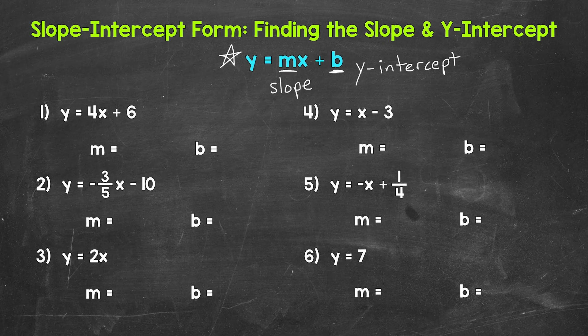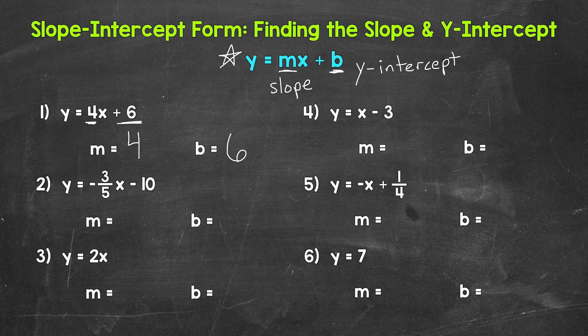Let's jump into number one, where we have y equals 4x plus 6. So what's our slope and y-intercept here? Our slope is next to the x, so 4. And then as far as the y-intercept, we have plus 6 here, so the y-intercept is 6, a positive 6. And that's our slope and y-intercept.